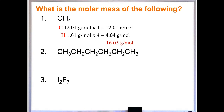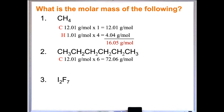For the second problem, count the carbons: one, two, three, four, five, six carbons, so 12.01 times six. For hydrogen, count them out: fourteen hydrogens, so 1.01 times 14. Then total those up and that's your molar mass. For the last one, we have something other than just hydrogen and carbon, but the process doesn't change. Go to the periodic table, find the atomic mass for iodine and fluorine — molar mass times two for iodine, and seven fluorine. Total them up.